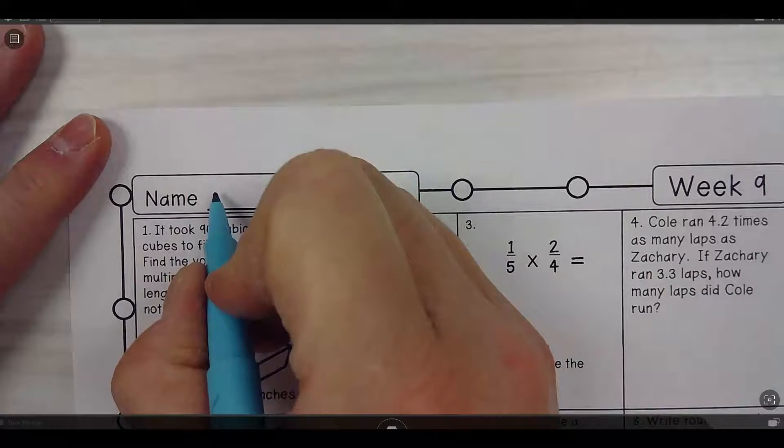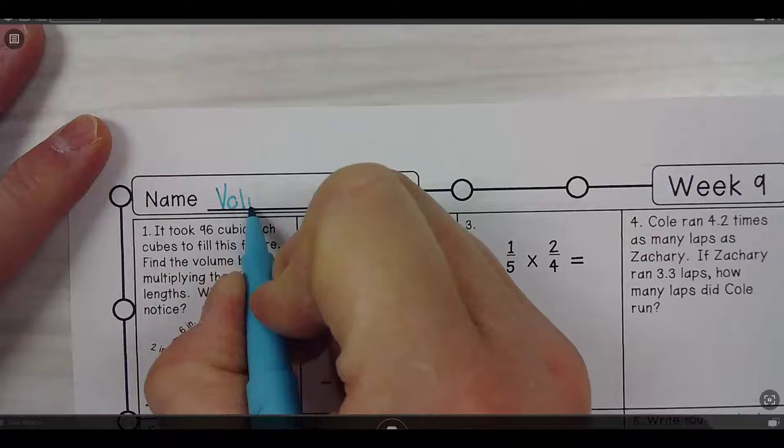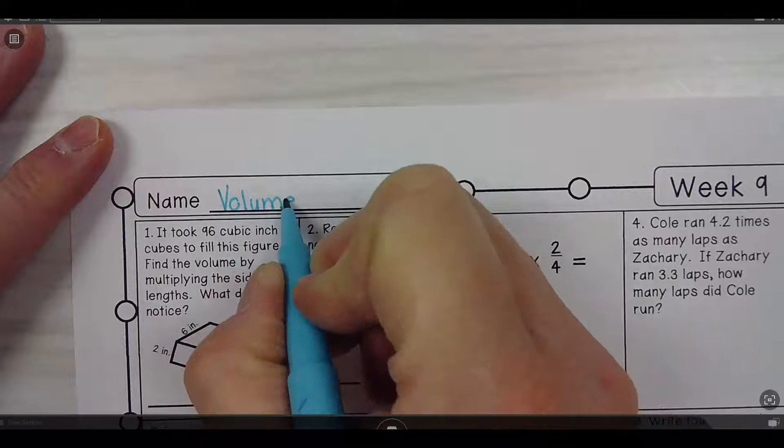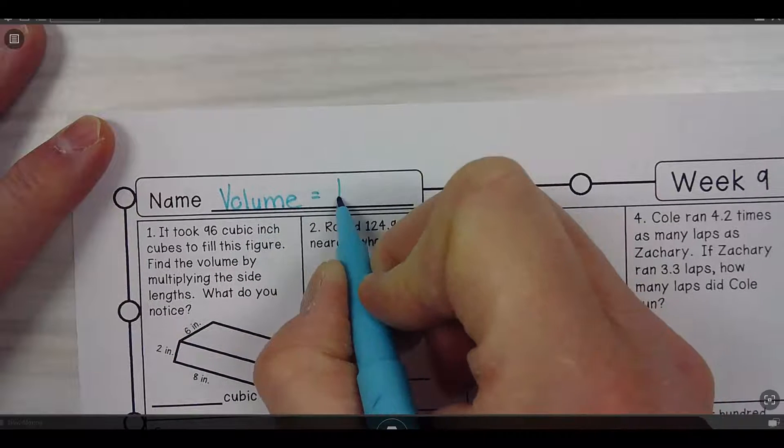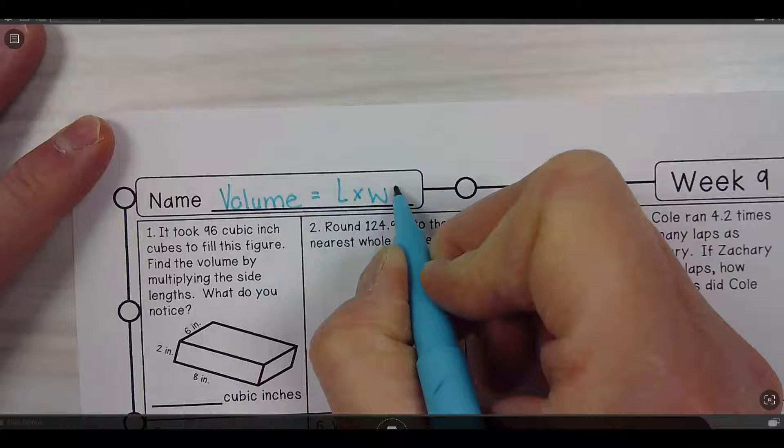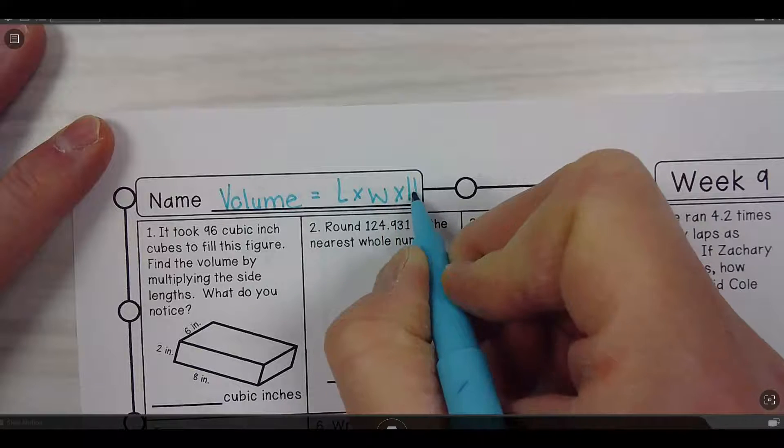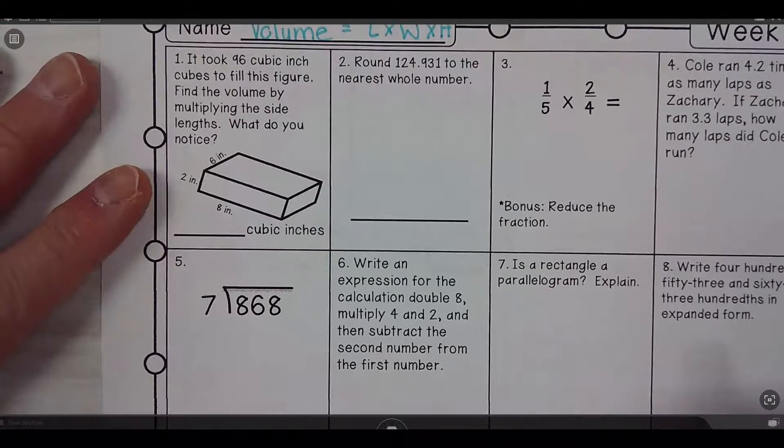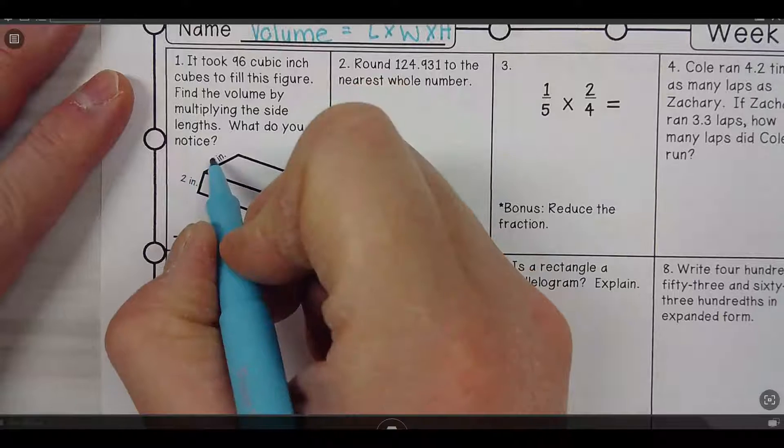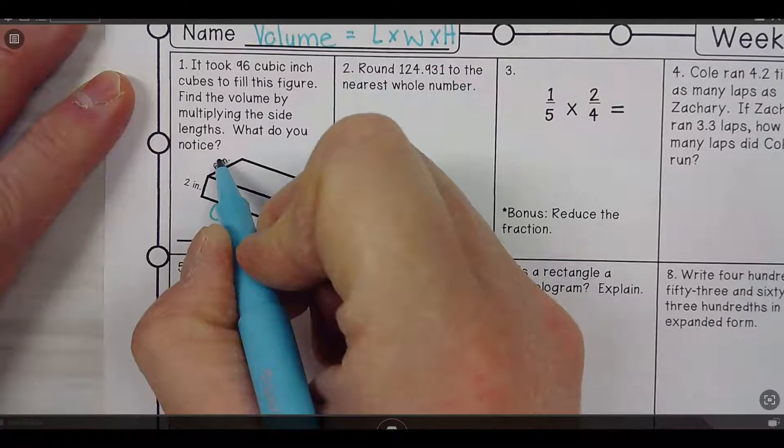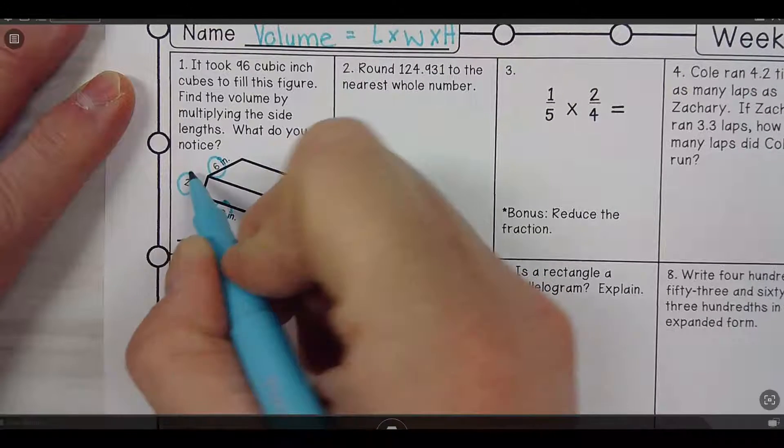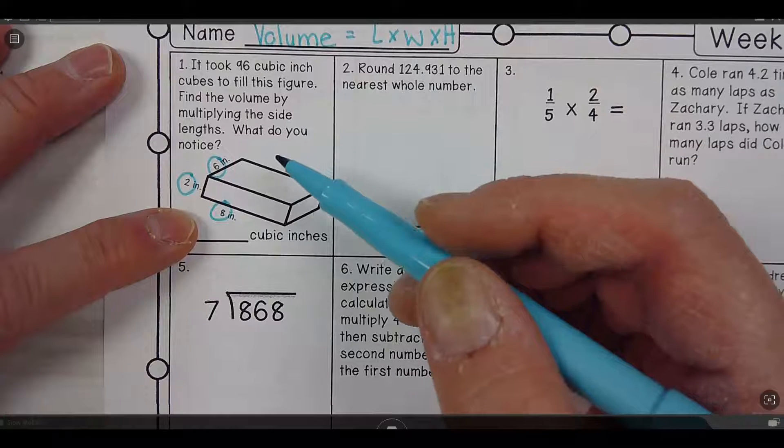The volume is length times width times height. So you're gonna multiply length times width times height.